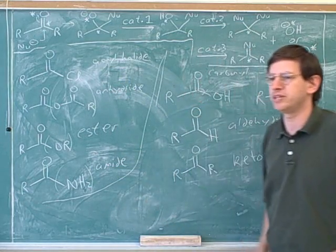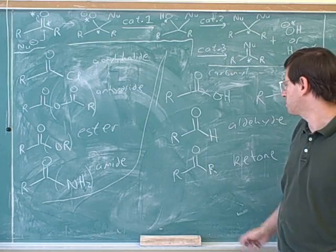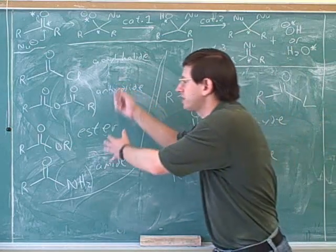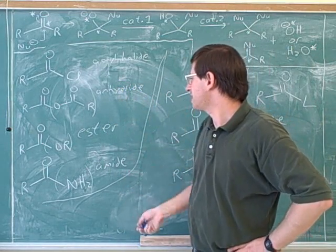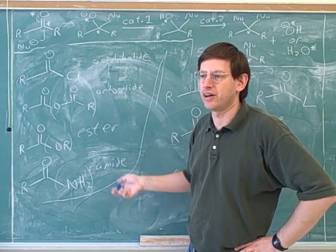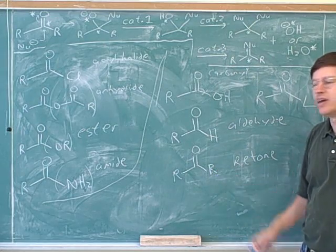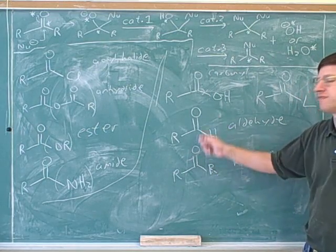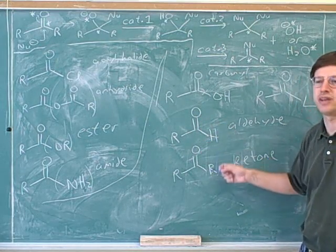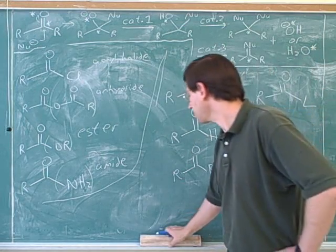The big difference between them—this is an important point to emphasize—is that carboxylic acid derivatives have possible leaving groups. Aldehydes and ketones, these groups down here can't leave. Sometimes the carbonyl oxygen can leave from an aldehyde or ketone, but these groups down here can't leave.